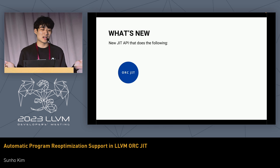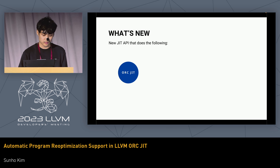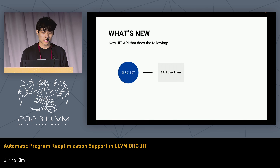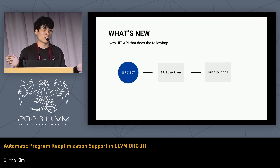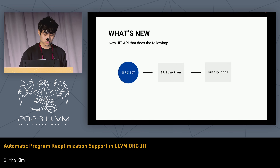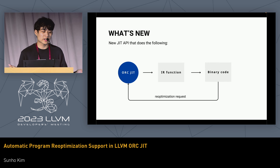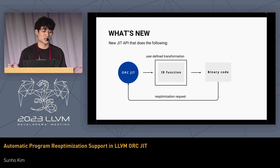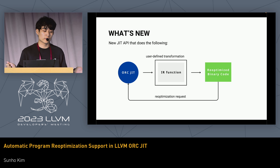What's new? What I have added to this JIT API is that before this project, our JIT received the IR Module and it got translated into binary code — end of story. That binary code got fossilized, not really being able to change it again. Now what I can do is that the binary code can request a re-optimization, and ORC JIT will perform a user-defined transformation — which can do whatever you want — and then recompile the binary code and swap it.